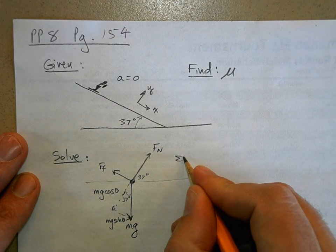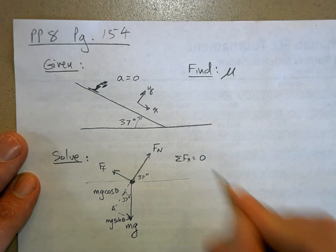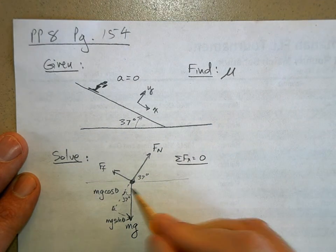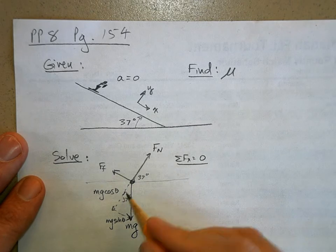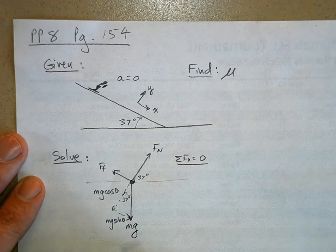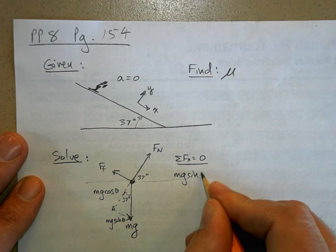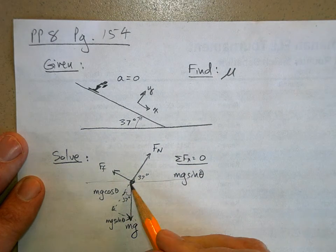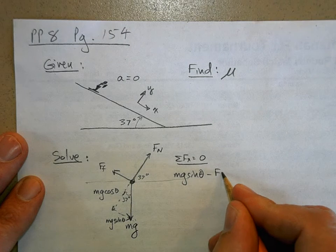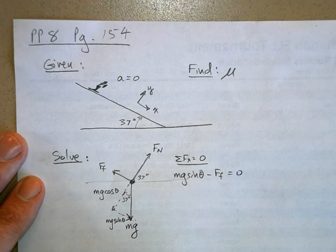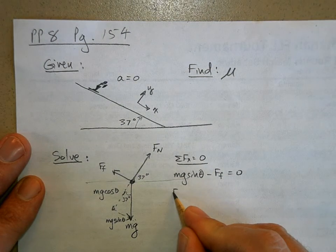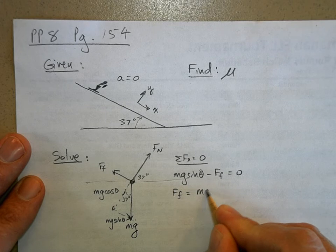When I sum the forces in the x direction, it's going to be equal to zero because there's no acceleration. So I look at my free body diagram, I've got mg sine theta minus the force of friction equals zero. Now what this tells me is that the force of friction is equal to mg sine theta.